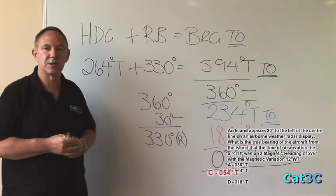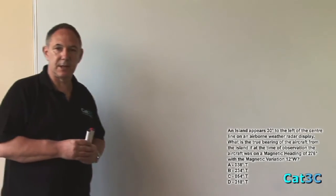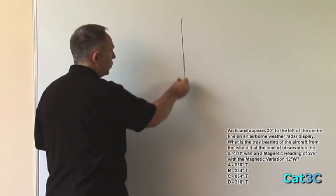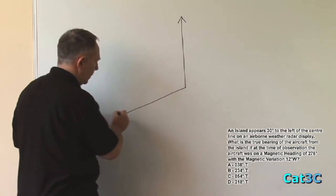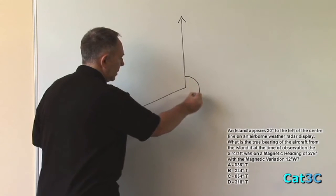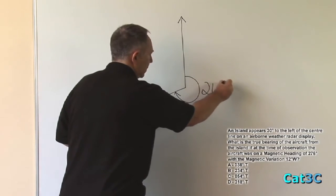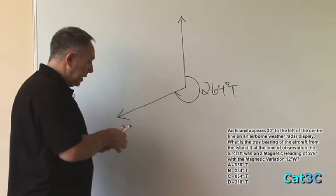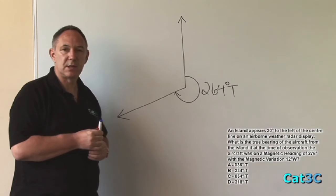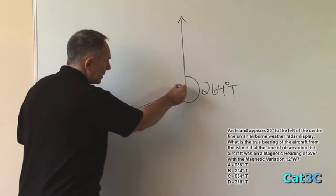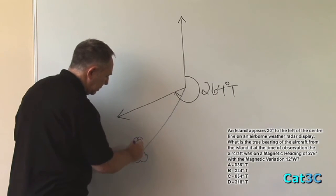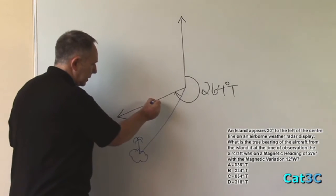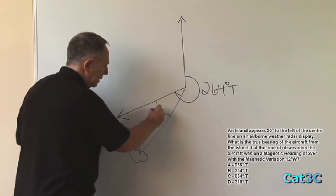So, your final answer is option C, 054 degrees true. We can also represent this as a very simple diagram. Using true north as the reference, the aircraft is on a heading of 264 degrees true, which is approximately that angle. We know that the island is 30 degrees to the left of the aircraft heading. So, that would be pointing down here. One island. And that's approximately 30 degrees to the left.